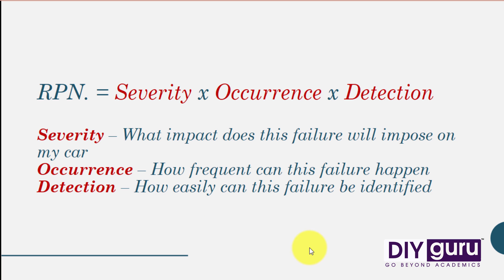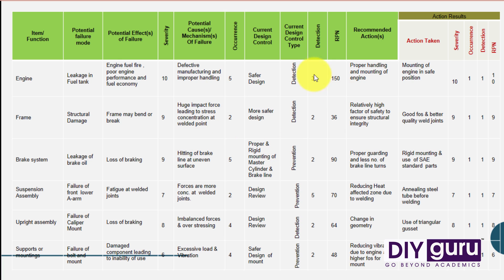This is the slide that you need to put down in your PPT. In the first column, you need to put down the names of sub-assemblies where chances of failure are most likely. In the second column — the potential failure mode — the potential modes of failure for that particular sub-assembly are mentioned. For example, an engine will fail if there is a leakage.